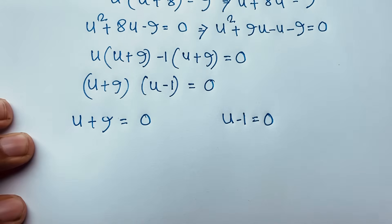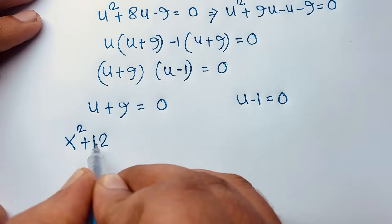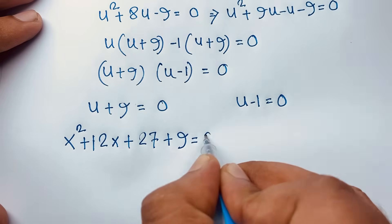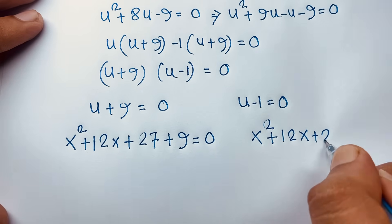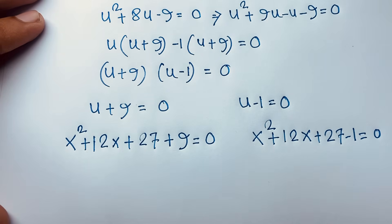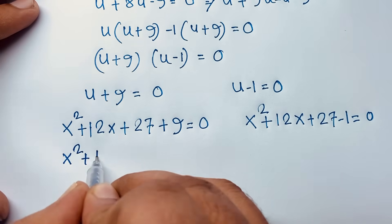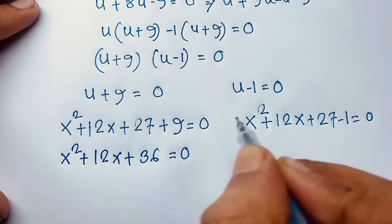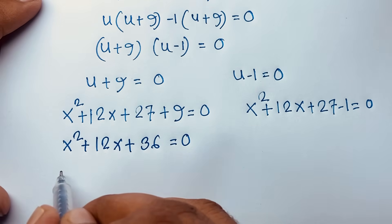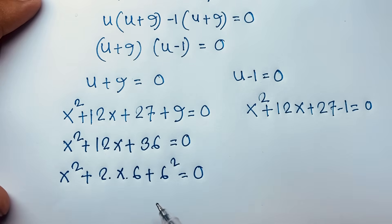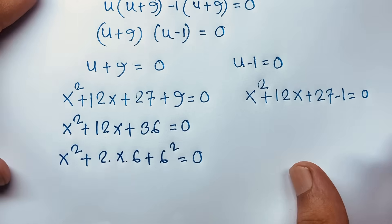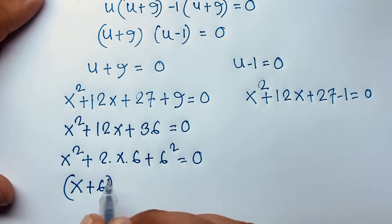Recalling u = x² + 12x + 27. Case 1: u = -9, so x² + 12x + 27 + 9 = 0, giving x² + 12x + 36 = 0. This factors as x² + 2(x)(6) + 6² = (x + 6)² = 0, which is a perfect square.